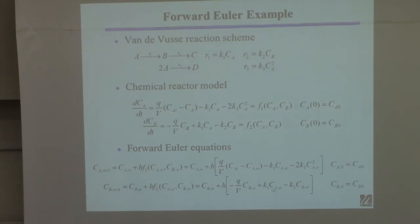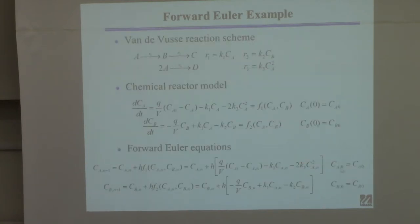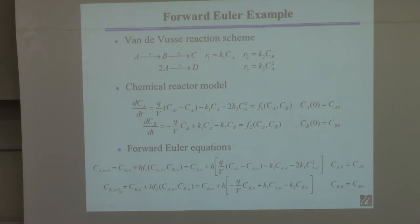So this is two iterative equations. To get started, you use the initial condition for A and B — you plug the initial conditions into both equations to get C_{A,1} and C_{B,1}, then plug those back in to get C_{A,2} and C_{B,2}, and you just keep going.